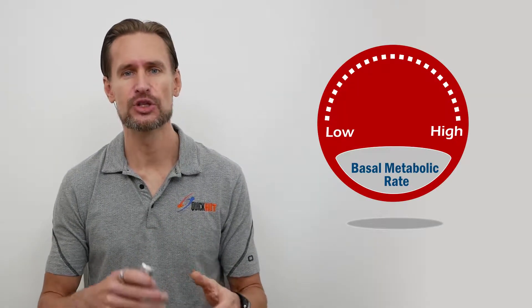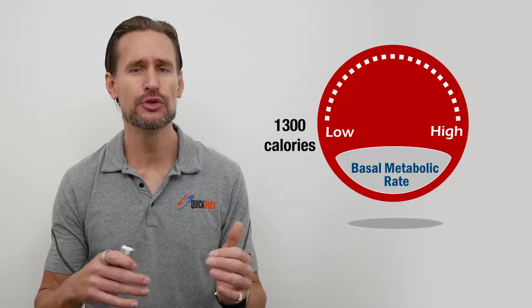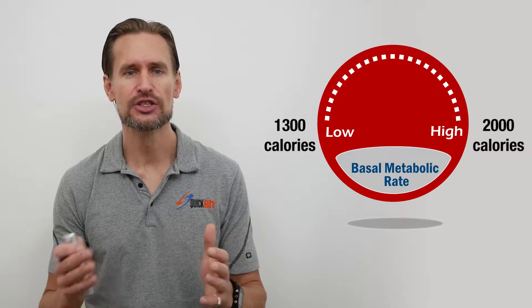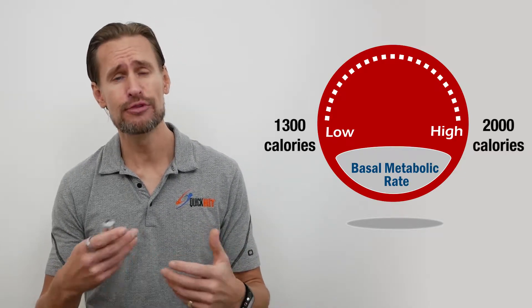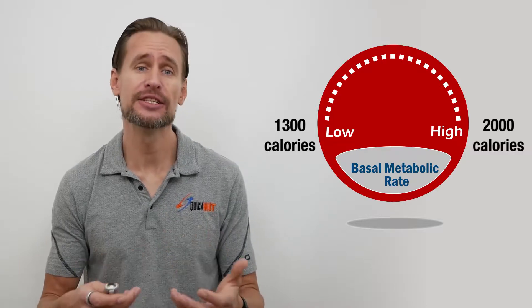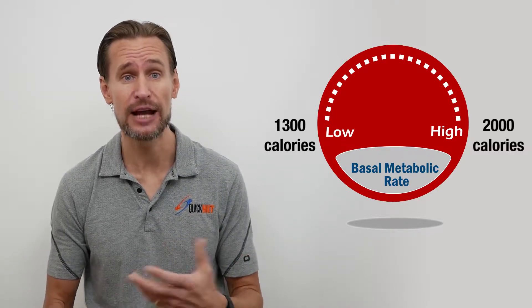All of us have an individual basal metabolic rate that is quite strongly tied to the amount of muscle tissue we each carry. Most adults have a basal metabolic rate of between 1,300 calories and 2,000 calories a day. You can see there's that variation, and that really comes down to being dependent on the amount of lean tissue and fat mass that the particular individual carries.